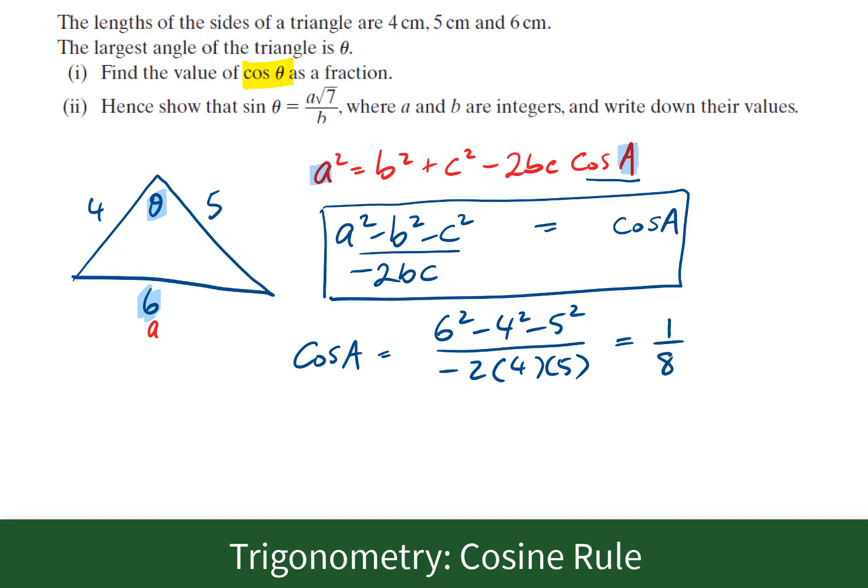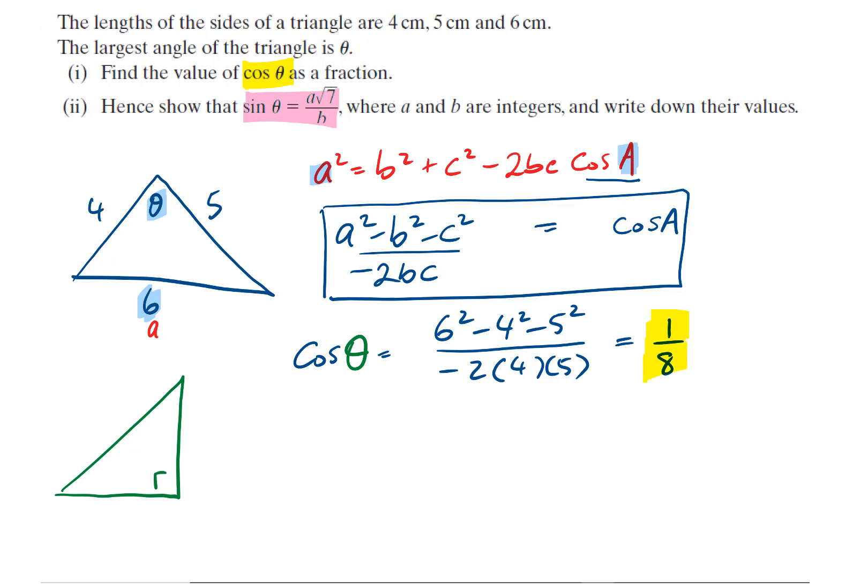The second question is to show what sine theta is. In these ratios, in SOHCAHTOA, if you know what cos A is, you should be able to work out what sin A is. I'm going to imagine a different triangle, a right-angled triangle with an angle theta. Now if that's theta, cos which is adjacent over hypotenuse is 1 over 8.